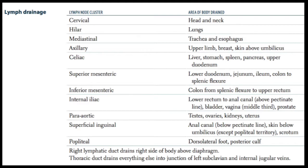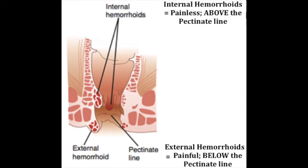The question asked what the associated lymph nodes are. Let's look at the difference: internal hemorrhoids are painless; external hemorrhoids are painful. Internal hemorrhoids are above the pectinate line, and external hemorrhoids are below the pectinate line. The answer for this USMLE question was superficial inguinal lymph node.